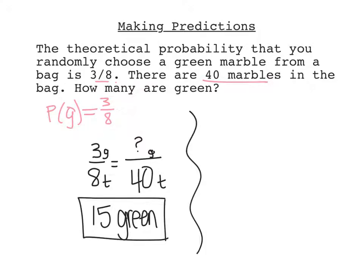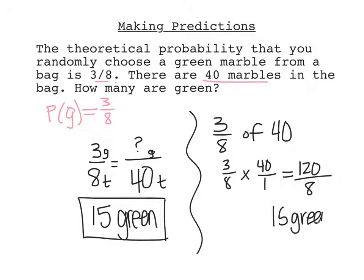That was one method. Another method is we could just multiply. If we know that there is a 3 eighths probability of there being a green marble and there's 40 marbles, we're really finding 3 eighths of 40. Or we know that of in this context means that we're multiplying. So 3 eighths times 40. I'm going to put 40 as 40 over 1. And I can multiply across here. I could have simplified first and then multiplied, but I end up with 120 eighths, which simplifies also to 15 greens.